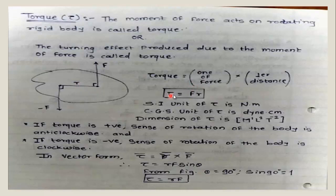The general formula: torque is equal to F into R, where F is the force acting on the body and R is the perpendicular distance, also called the moment arm or moment distance. The SI unit of torque is Newton meter, and the CGS unit is dyne centimeter. The dimension of torque, combining force and distance dimensions, is M raised to 1, L raised to 2, T raised to minus 2.